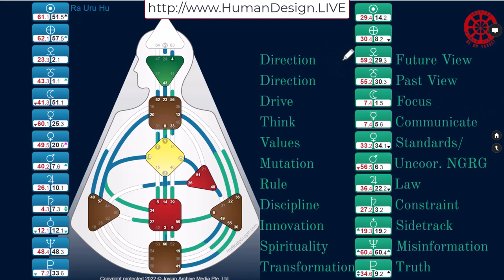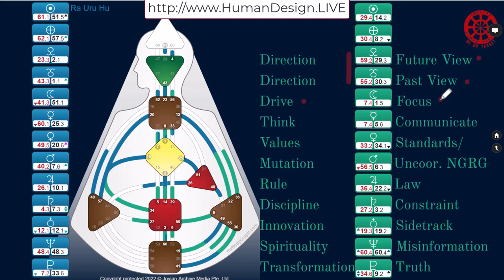The nodes are directional and we have either a future view or a past view. You can use those terms, or perspective is another word. Future perspective, past perspective, future direction, past direction. On the moon, we can use the term drive — unconscious drive, or conscious focus. So this year your focus is going to be this, and it might be a person that's very educational for you because this is what they're going to focus you on. Is it correct for you? Use your authority to decide.